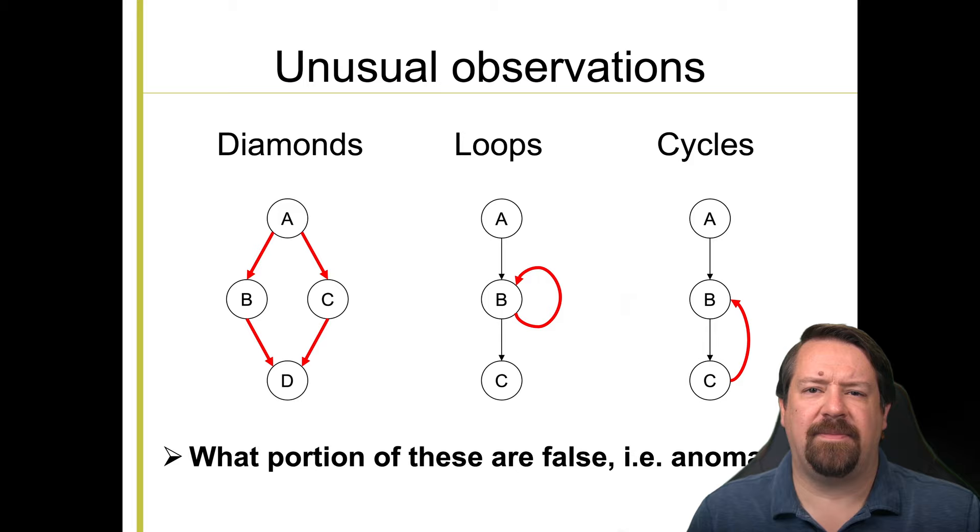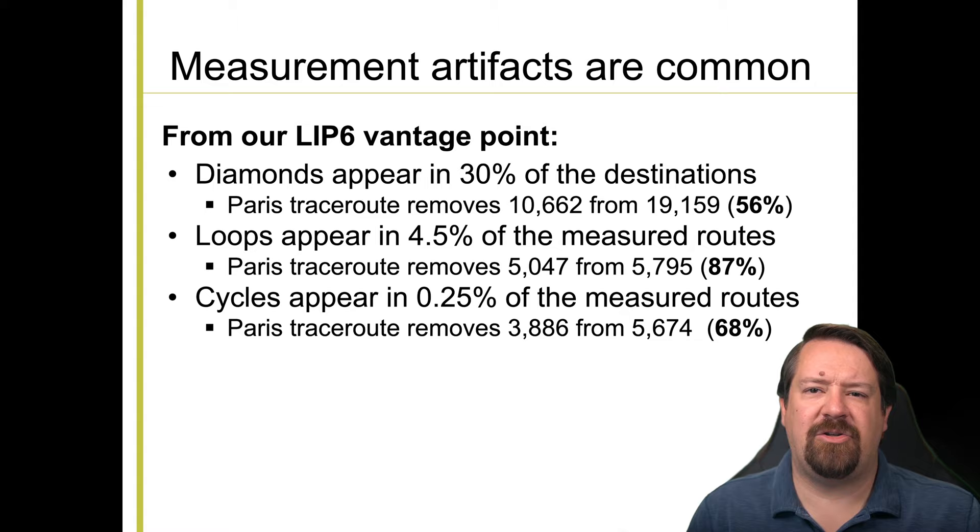And these include diamonds, loops, and cycles. And as we've said, all of these can be real. So the question is, how many of these are being introduced by traditional tracerout and how many are real? From their vantage point, they saw diamonds in 30% of the destinations, but 56% of those were removed by using Paris tracerout. It makes sense that many of these would be real because real diamonds are an artifact of load balancing.